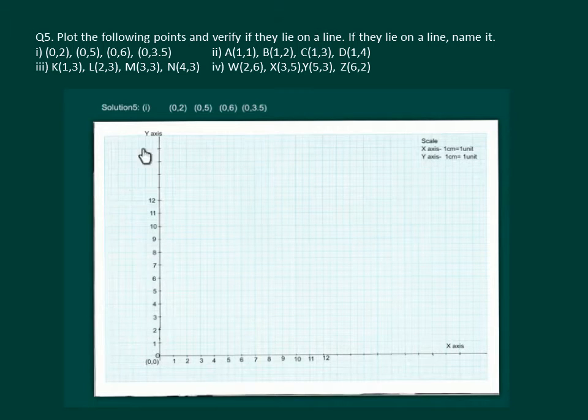Let us take a graph paper. Mark x-axis and y-axis. Take the scale, 1cm equals 1 unit on x-axis and y-axis. And now let us start plotting our points.